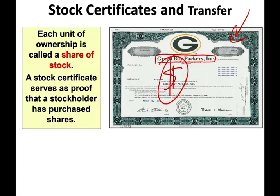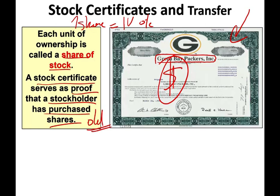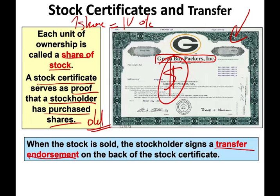Each unit of ownership is called a share of stock, and generally speaking, one share equals one vote. The more shares you have, the more votes you have — your power is your money. A stock certificate serves as proof that a stockholder has purchased the share, but that's old now. I own stocks and don't have any stock certificate whatsoever. When the stock is sold, the stockholder used to sign a transfer endorsement, but now you just click the sell button on your computer. Back in the old days, people needed that paper as the only proof of ownership.